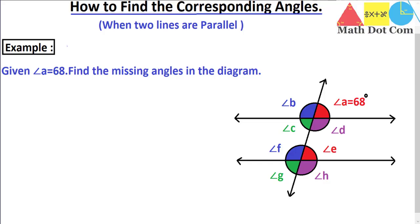Hello everyone. In our previous lecture we have seen what corresponding angles are, and hopefully your concepts are clear now. Today we will see how you can find the corresponding angles if you are given one angle and the two lines are parallel. In our next lecture we will see how to find corresponding angles if the lines are not parallel. But in this lecture we will see how to find the other angles if only one angle is given.